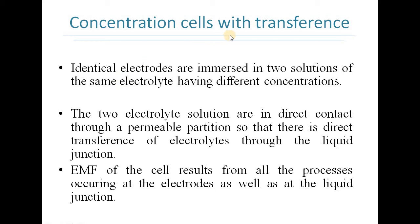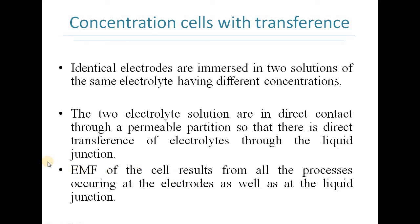Now, in concentration cells with transference, the identical electrodes are immersed in two solutions of the same electrolyte having different concentrations, and the two electrolytic solutions are in direct contact through a permeable partition, so there is direct transference of electrolytes through the liquid junction. This is the basic difference from concentration cells without transference. The EMF results from all processes at the electrodes as well as at the liquid junction, so we must add the junction EMF to the net electrode reaction to calculate the overall EMF.